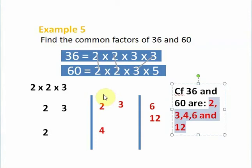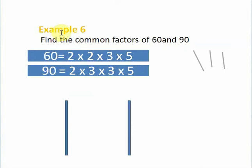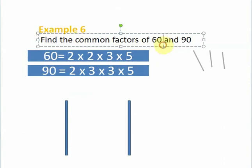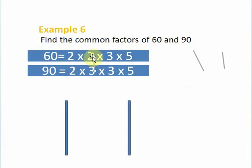Example 6: We have to find the common factors of 60 and 90. So what is common? 2 is here, 2 is here, so I can pick this 2 and this 2. Next one, I will pick a 3. I can pick this 3 and this 3. Next one, I will pick this 5 and this other 5.